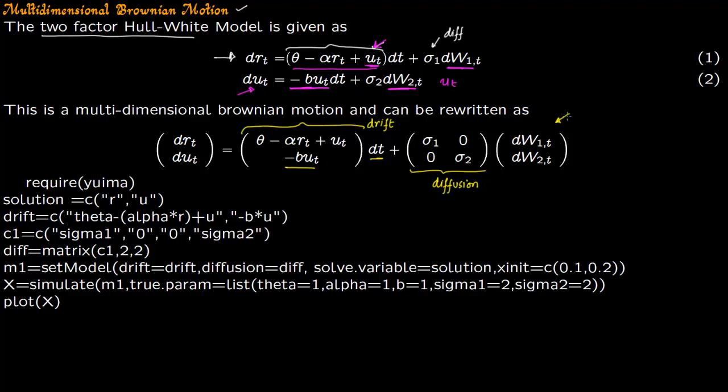And this is our random variables taken from Normal(0,T). Now a word about theta and alpha. So theta and alpha we are taking as constants. So we are taking three constants here: theta, alpha and b, three constants in the drift, and two constants in the diffusion.